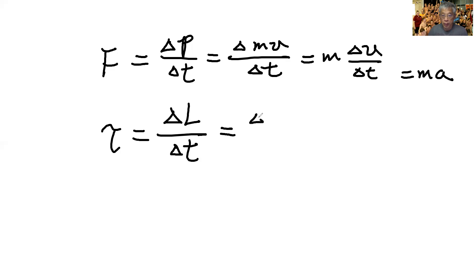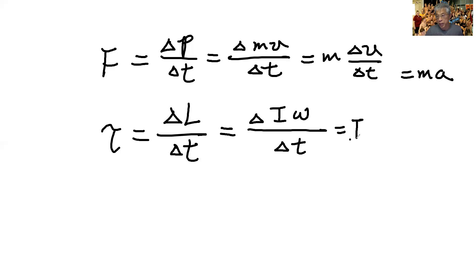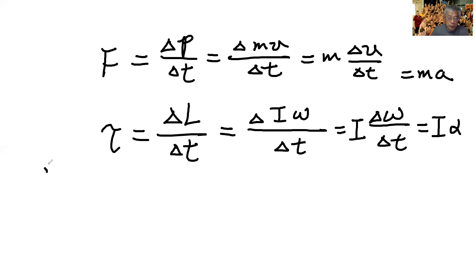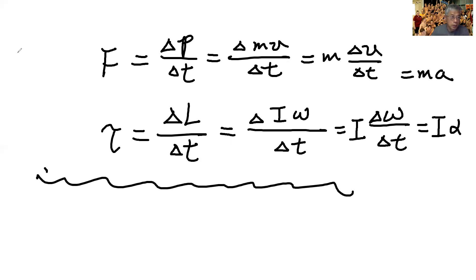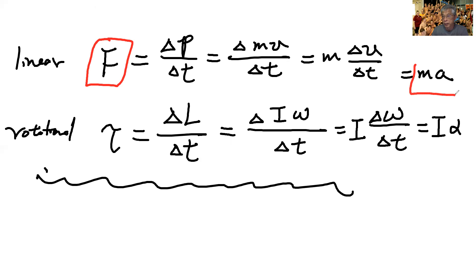For the rotational case, torque equals ΔL/ΔT, which is delta of Iω over delta T. If I is constant, it comes out, and delta omega over delta T equals alpha, giving torque equals I times alpha. So comparing: linear case gives F = ma, and rotational case gives τ = Iα.